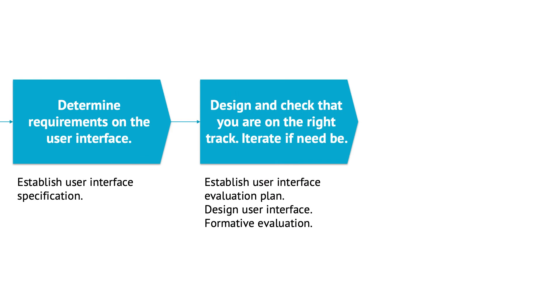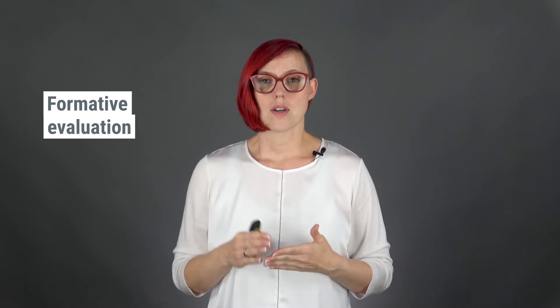Next, you need to implement the requirements by designing the device and its user interface, and check that you are on the right track along the way. That is really important because from experience, you won't get the design right on the first try, especially when designing a new product. There's a term for making tests along the way: formative evaluation. This term is used in usability engineering and also in teaching, where it means almost the same thing — checking that you are on the right track.